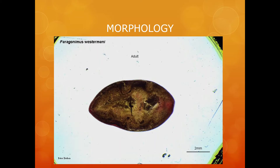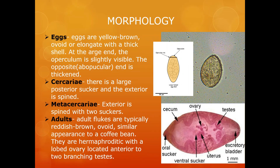Now let us explore the morphology of this parasite. If you look at the image on the top right you will notice the eggs are ovoid in shape with a yellow-brown colour and a rather thick shell, highlighted by the dark halo around the egg. The operculum — a structure that covers the aperture — is shown in the drawing beside the image. The cercariae, not shown here, which is the form that invades the crustacean, has a spined exterior and a large posterior sucker. The metacercariae, also not shown, is the form ingested by humans and has two suckers with a spined exterior.